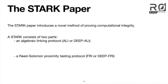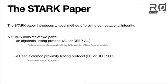A STARK has two parts: the first part is an algebraic linking protocol, and the second part is a Reed-Solomon proximity testing protocol. I'm going to leave algebraic linking as a black box and not talk about what it is today. We'll talk a little bit about Reed-Solomon proximity testing because that's what FRI really is. The algebraic linking part turns our assertion of computational integrity into a Reed-Solomon assertion, and then the second part proves that Reed-Solomon assertion.